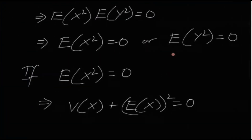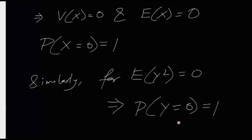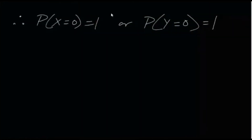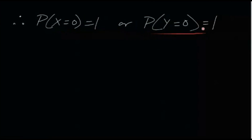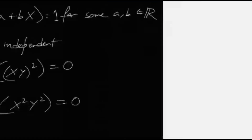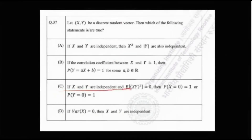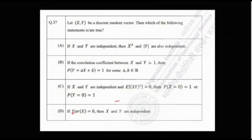Similarly, if E[Y²] = 0, then P(Y = 0) = 1. Therefore we get P(X = 0) = 1 or P(Y = 0) = 1, meaning X is degenerate at zero or Y is degenerate at zero. Option C is also true.